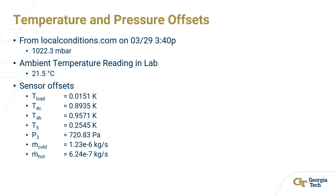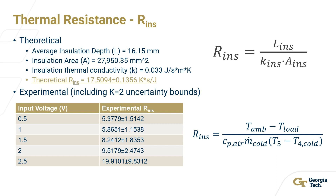After measuring the depth of the insulation device and using the equation in the top right corner, the theoretical thermal resistance was calculated to be 17.5 plus or minus 1.356. Our experimental values can be seen listed in the table above. The closest experimental value to the theoretical value happened at 2.5 volts. Mostly the theoretical value was higher than the experimental, likely due to the depth of the insulation surrounding the load not being the same and it not being fully insulated on all sides.